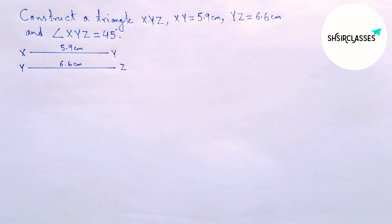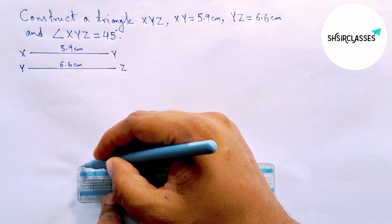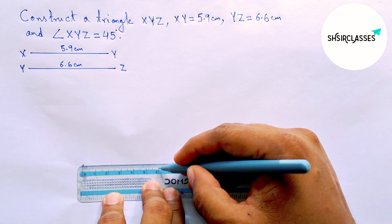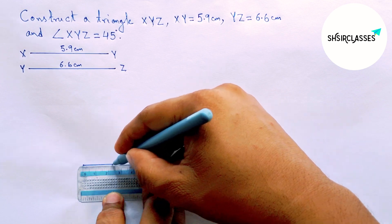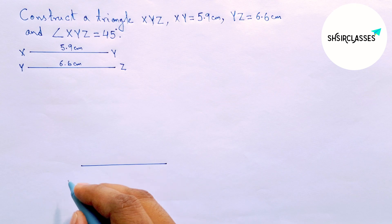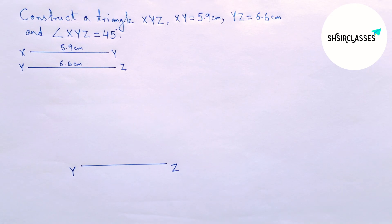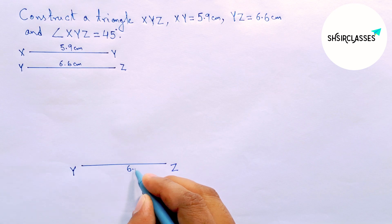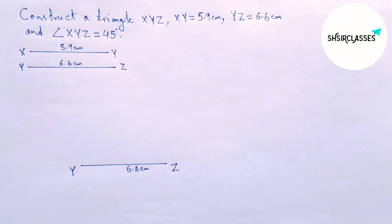Again drawing a line segment of length 6.6 centimeters. Labeling here Y and Z — YZ equals 6.6 centimeters. Next, drawing angle XYZ equal to 45 degrees on the point Y with the help of a compass.